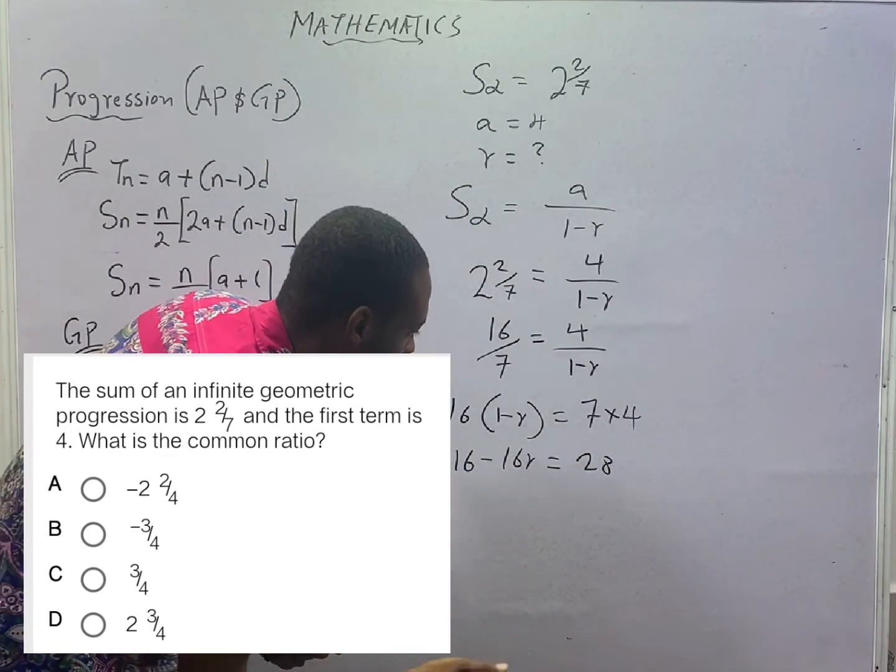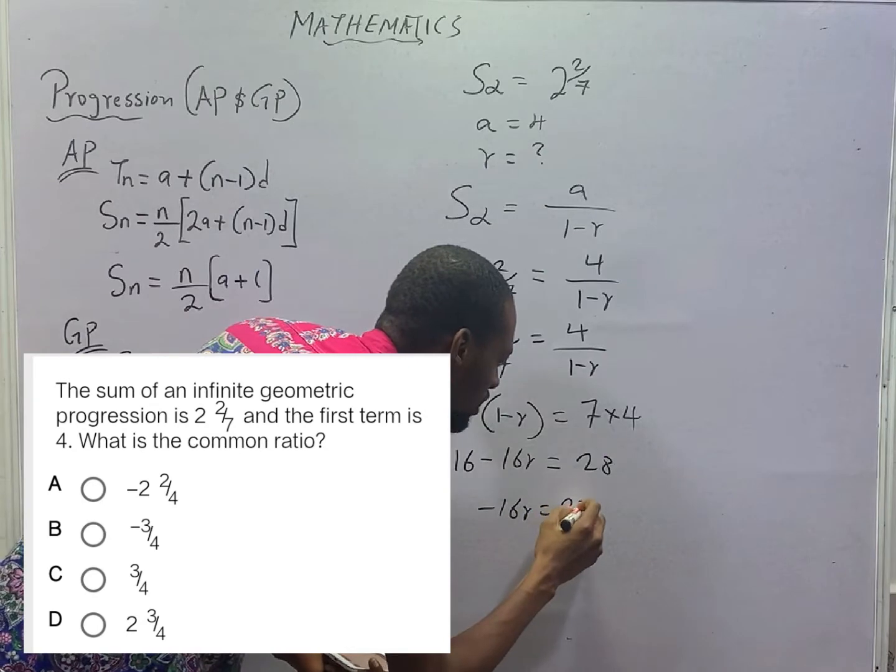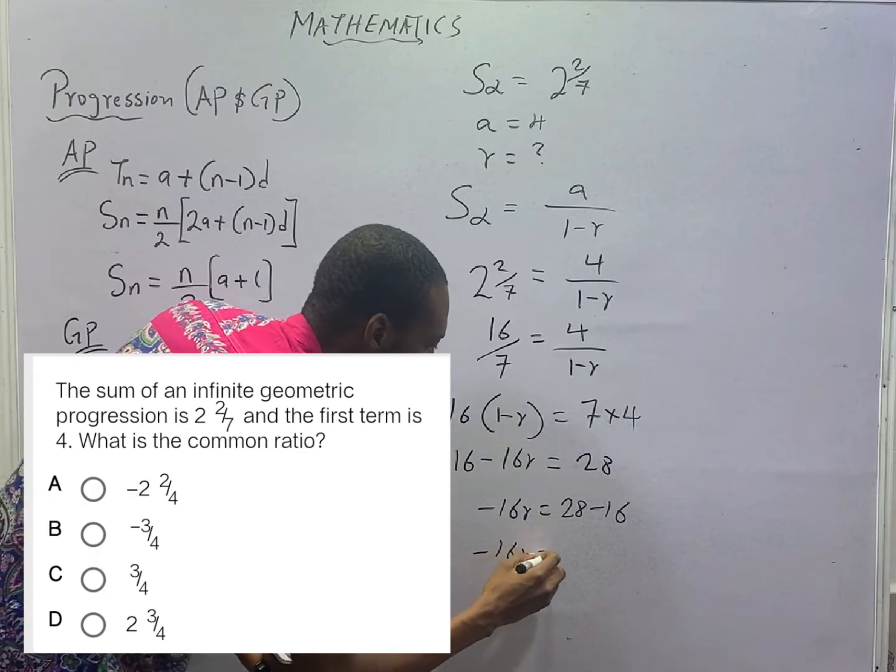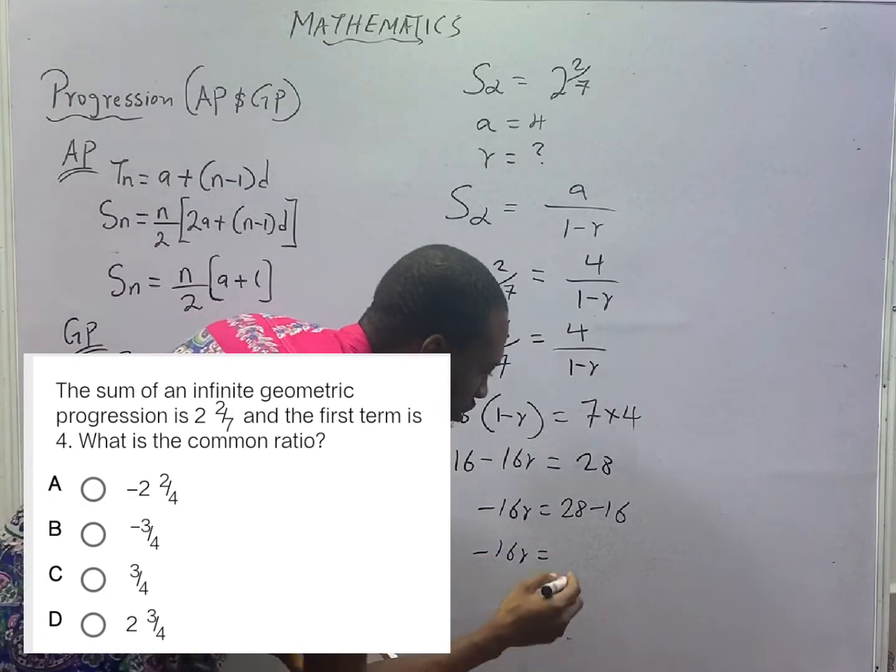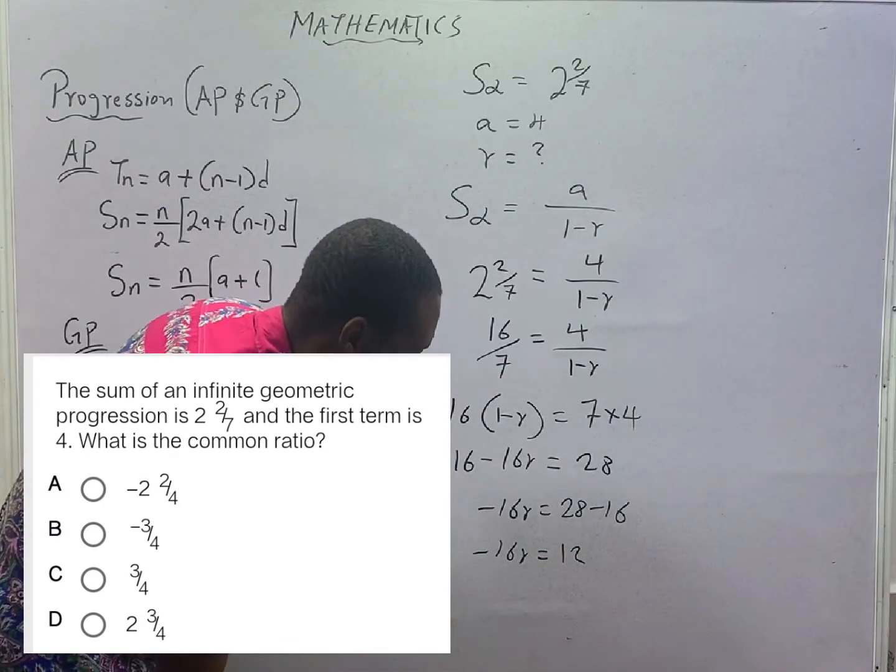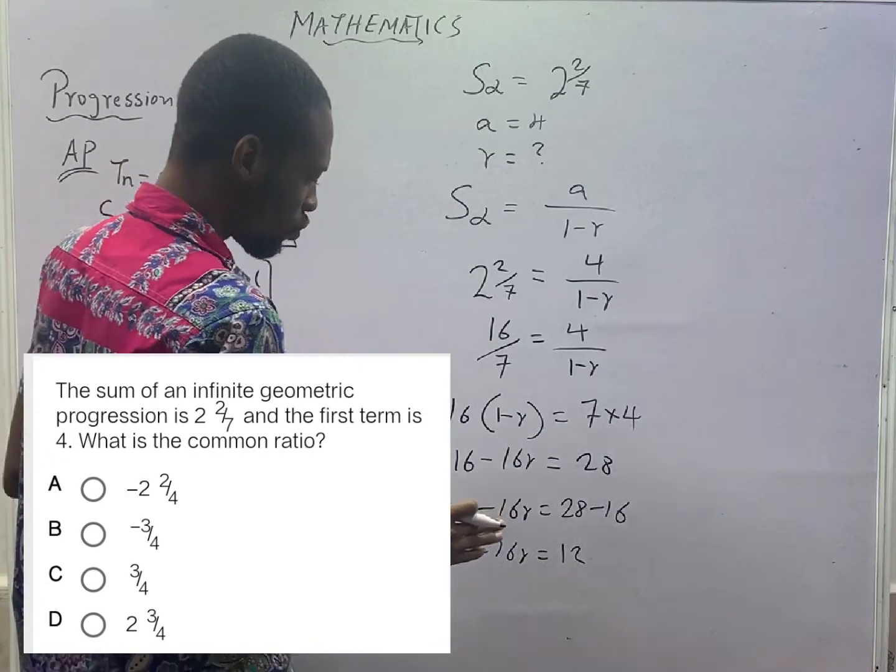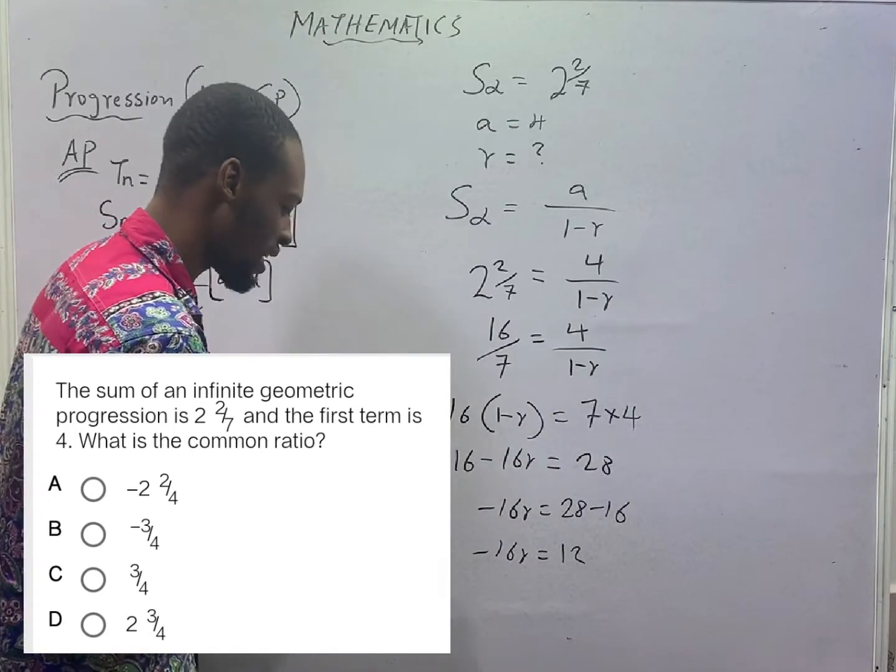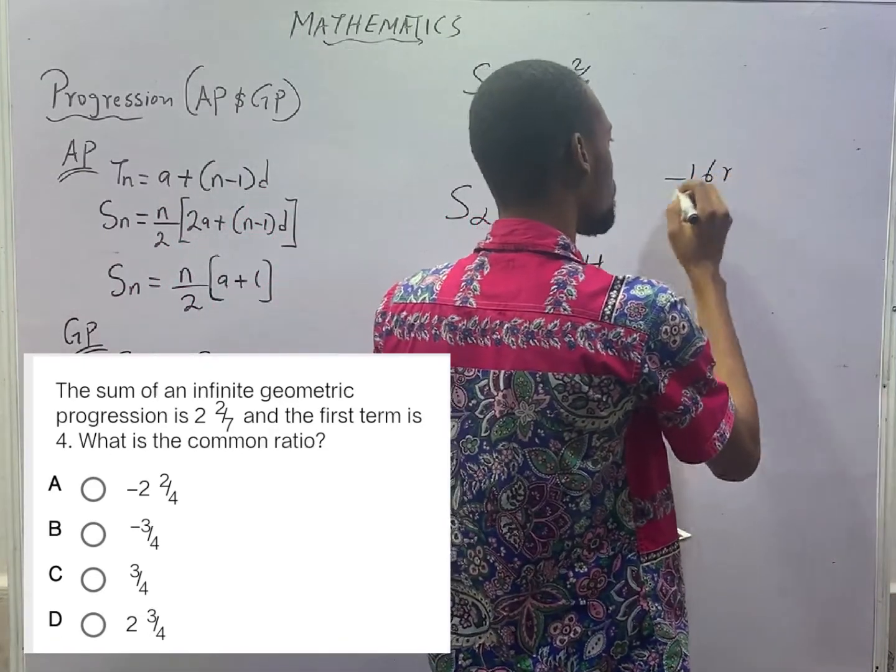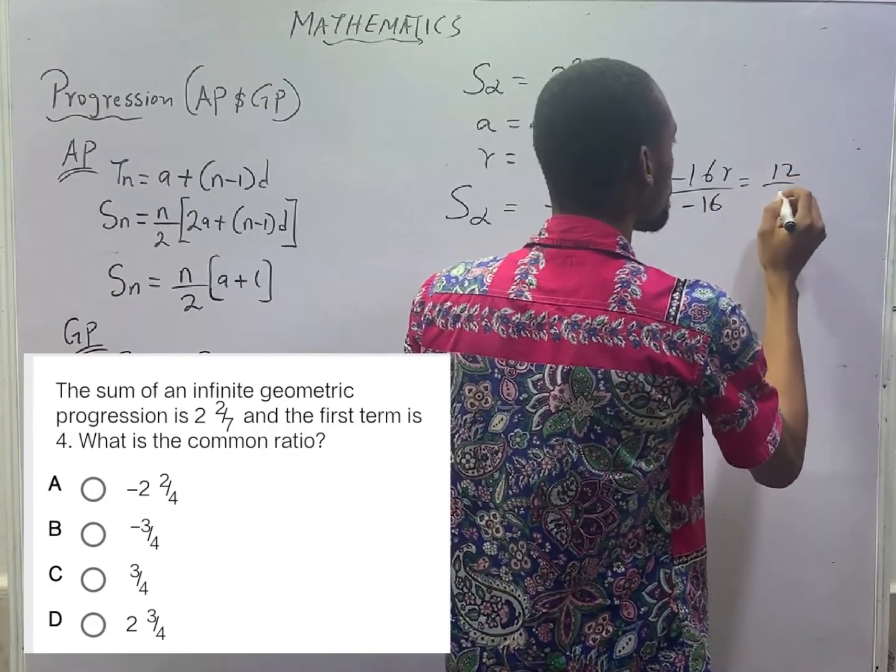When you collect like terms, -16R equals 28 minus 16. -16R equals 12. To get R, we divide both sides by -16 to give us R equals 12/(-16).